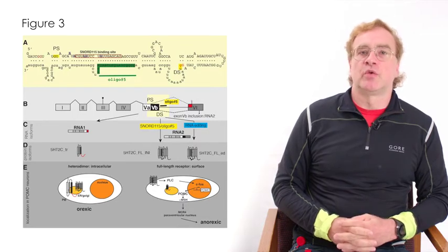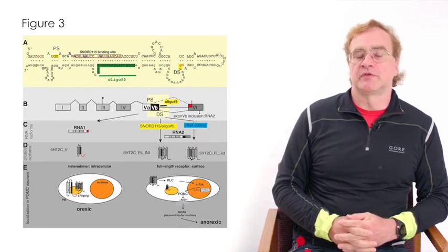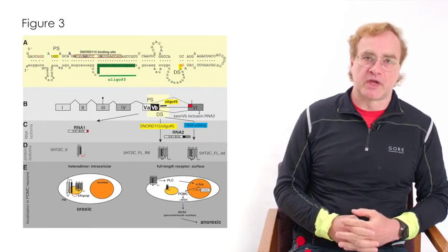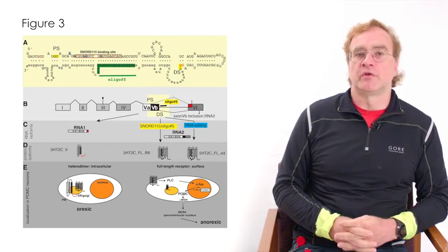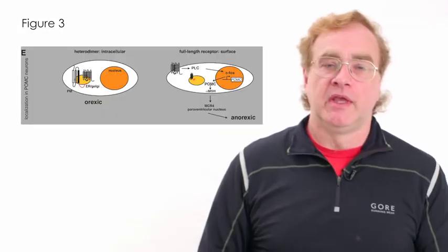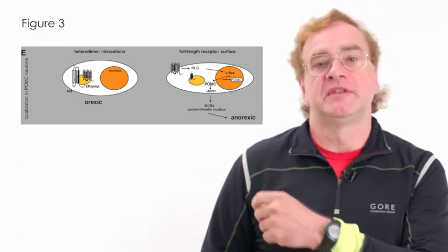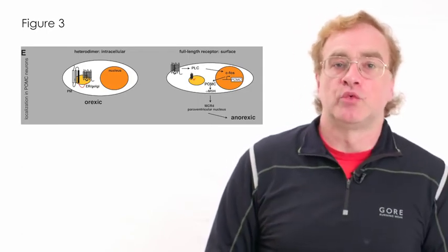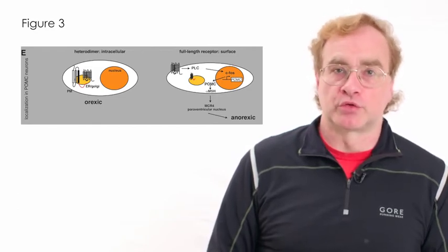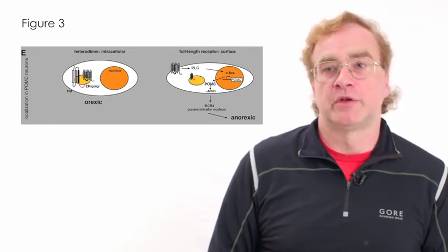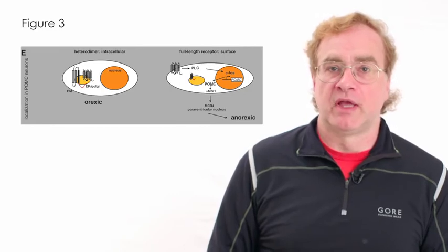Thus, SNORD115 regulates the activity of the serotonin receptor system because the truncated isoform acts as a dominant negative form, switching off the serotonin system. In terms of function, this means that SNORD115 regulates the activity of the serotonin receptor by controlling the ratio of the truncated to the full-length receptor isoform.